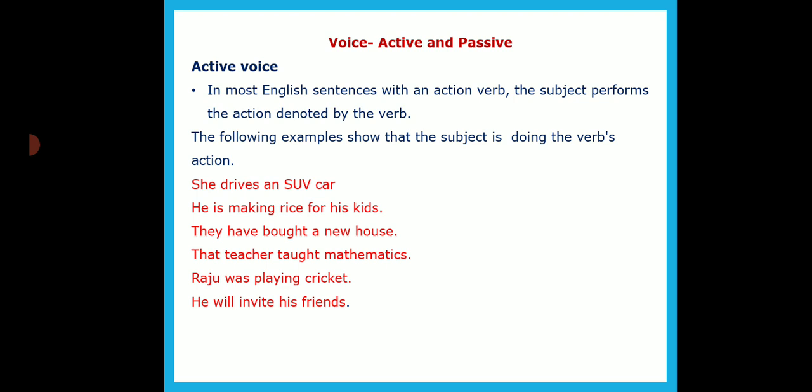'He is making rice for his kids' — at present, he is preparing rice. So that sentence is in present continuous tense. 'They have bought a new house' is present perfect tense. 'That teacher taught mathematics' — can you identify which tense it is? Yes, it is simple past tense, because the action is already done.